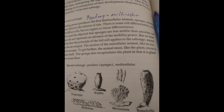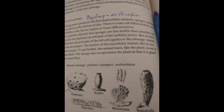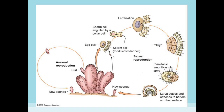Here we have the life cycle of sponges. They're kind of strange — they can reproduce either asexually, where a bud can come off and root to the seafloor, or they can reproduce sexually as well. In the sexual cycle, the egg cell and sperm cell combine, creating an embryo and a new sponge. So it can reproduce either way.